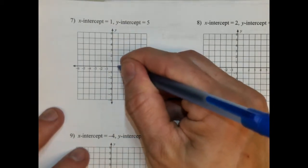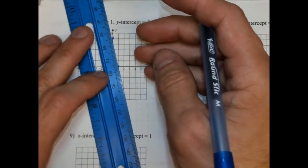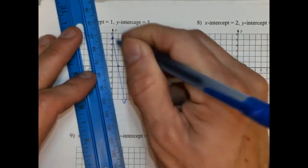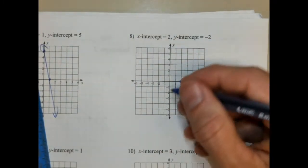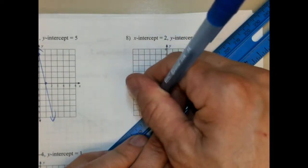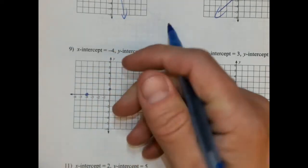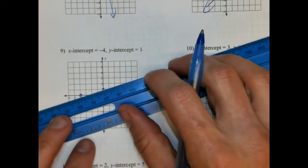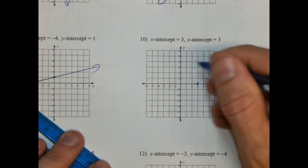The x-intercept is 4, y-intercept is 5. X-intercept is 2, y-intercept is negative 2. X-intercept is negative 4, y-intercept is positive 1. X-intercept is 3, y-intercept is positive 3.